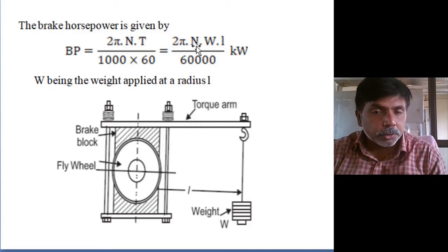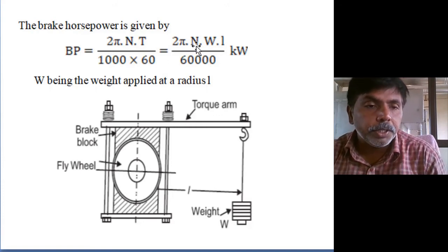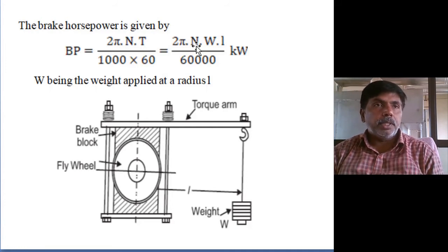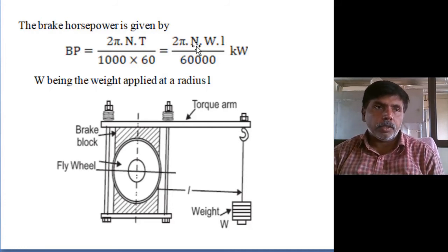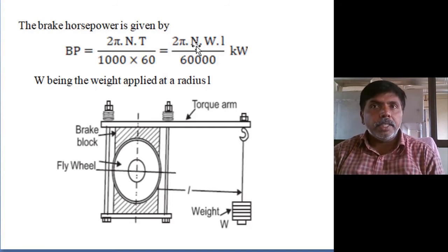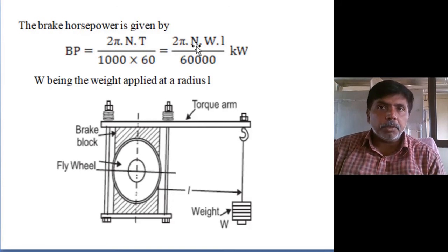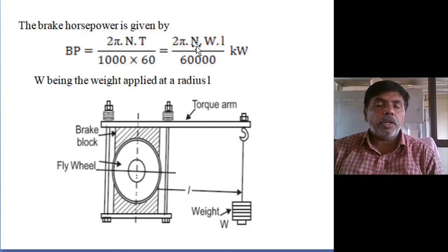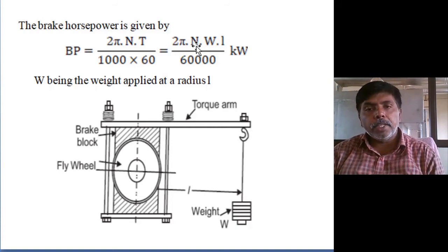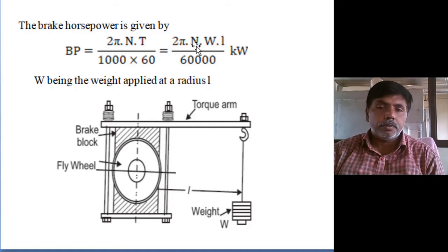Here we are considering speed directly, not power strokes. In indicated power, number of power strokes was required because we were measuring chemical energy to heat energy conversion. But for brake power, we are measuring the rotational torque at the crankshaft, so we take speed directly. Brake power equals 2πNWL / 60,000.